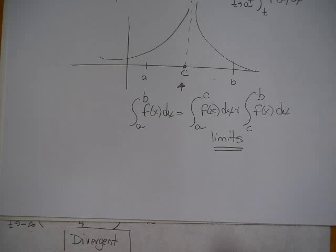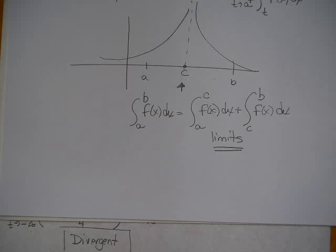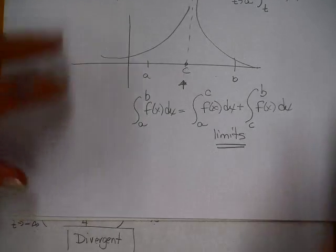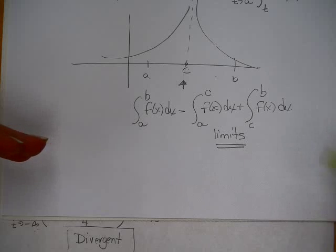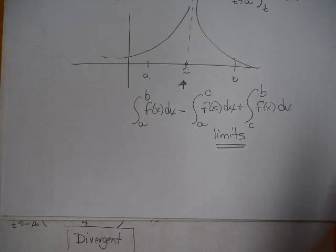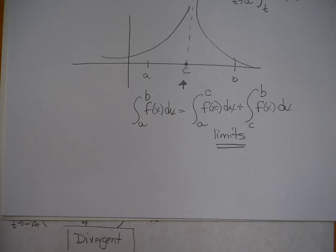If your point of discontinuity is between a and b, you have to split your integral at c, the point of discontinuity. So go from a to c, then from c to b. Both of these are limits. They either converge or diverge — if they have a value they are convergent; if they approach infinity, negative infinity, or do not exist, they are divergent.